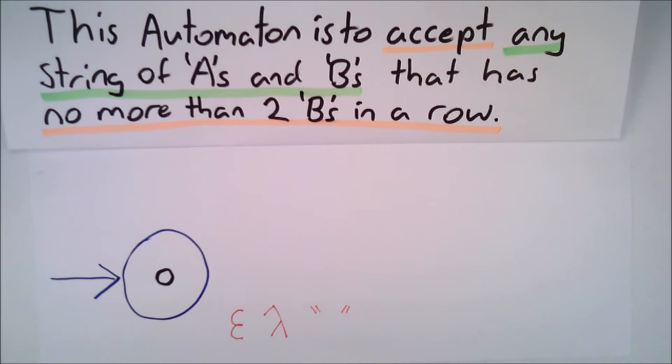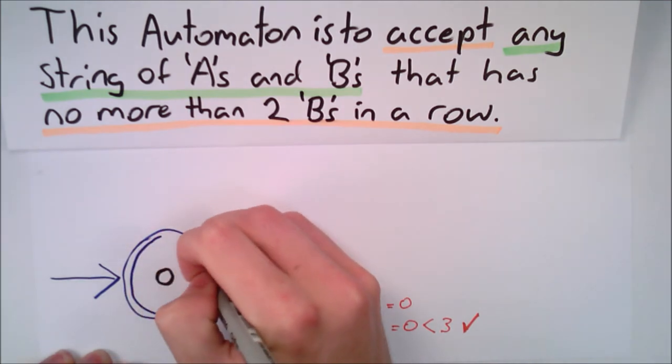So, we put in nothing. There are at most 0 B's in a row in our string. 0 B's is obviously fewer than 3 B's, so this string is accepted. This means that our first state is also an accepting state. Let's give it another circle to show this.